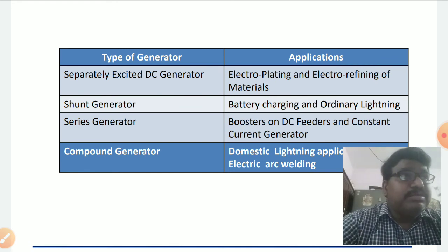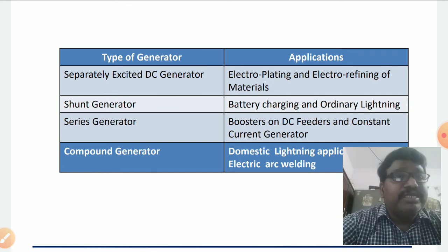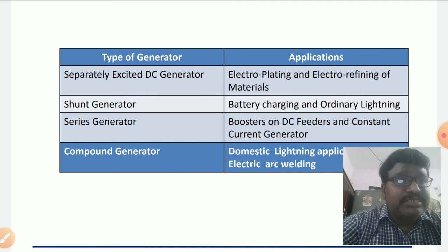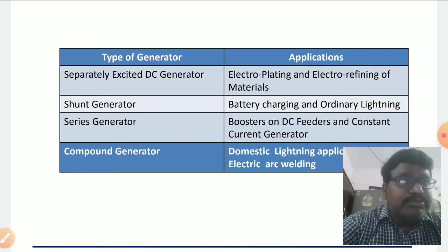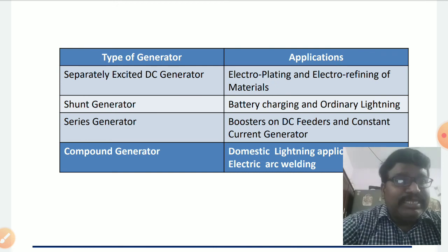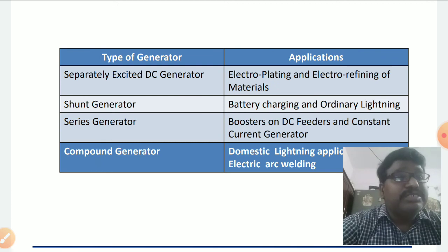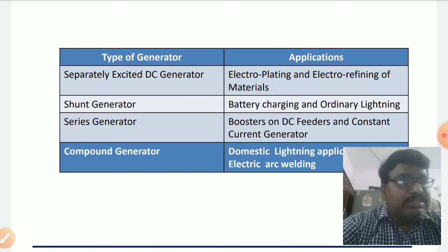Because of its characteristics, the series generator is majorly used as a booster for DC feeders. At very heavy loading conditions, there is a huge voltage drop in transmission or distribution lines, so the series generator is used to boost up the voltage in distribution lines. It is also used as a constant current generator, since it supplies constant current to the load.